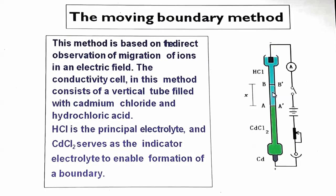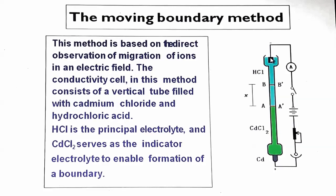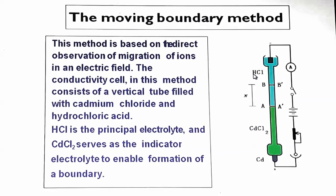Since cadmium chloride is heavier than HCl, HCl will float on top. A clear, visible boundary AA- can be seen before electrolysis begins, when no potential has been applied. The cathode is made of a platinum plate and the anode is made of a cadmium plate or sheet. Cadmium chloride is the indicator electrolyte that enables the formation of the boundary.